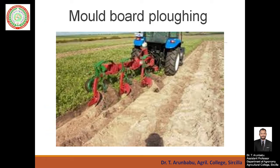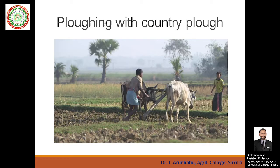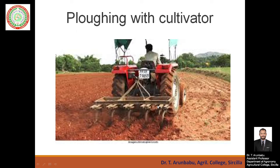We have different implements for tillage operations. The first one is the Moldboard Plough, which generally performs four operations at a time: it cuts the soil, lifts the soil, turns the soil, and pulverizes the soil. Ploughing can also be done with a country plough, as commonly practiced at the village level, as well as with a cultivator.